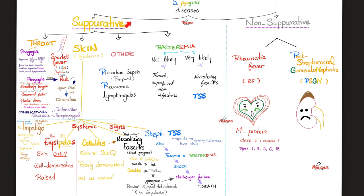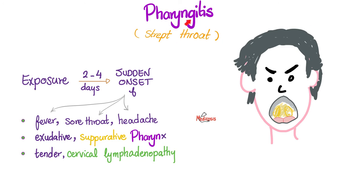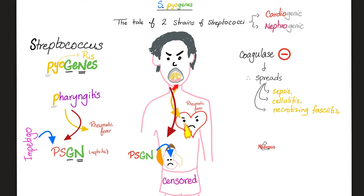Streptococcus pyogenes can lead to a large number of diseases. Don't forget throat infections, skin infections, and the two major complications: rheumatic fever and post-streptococcal glomerulonephritis. Reviewing strep throat or pharyngitis — after exposure, give it two to four days and you'll have sudden onset of fever, sore throat, headache, exudative pharyngitis with lots of pus, and tender cervical lymph nodes.